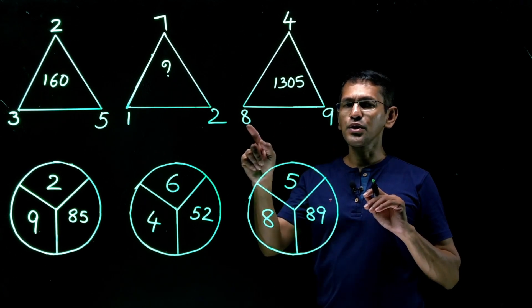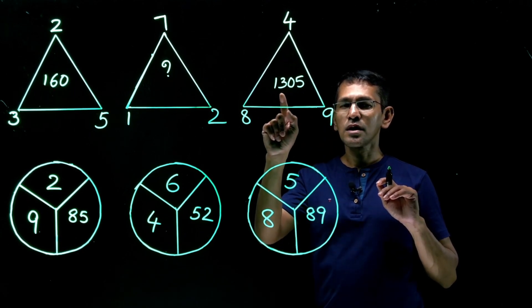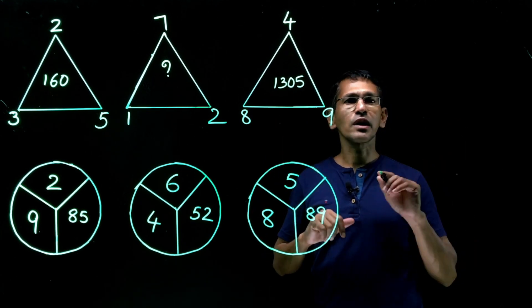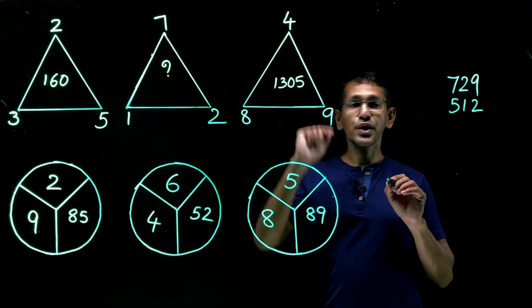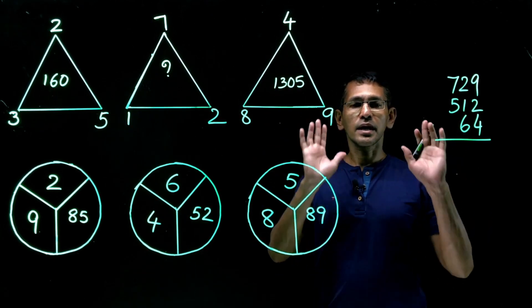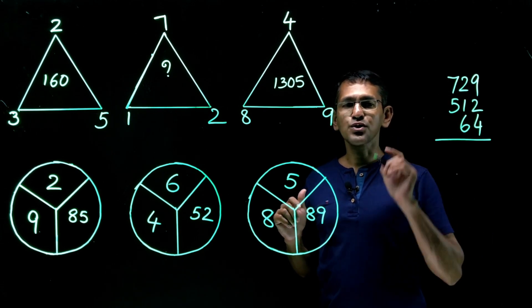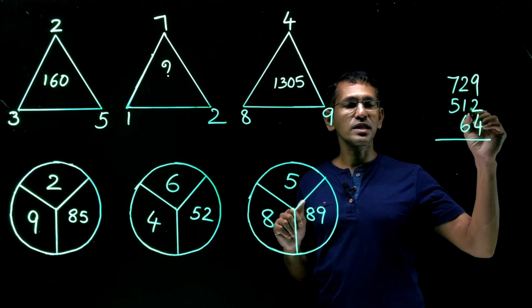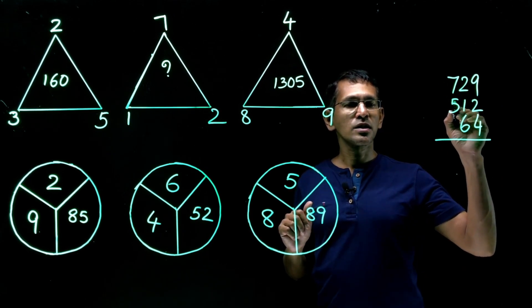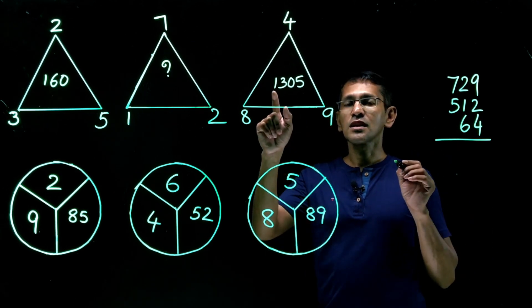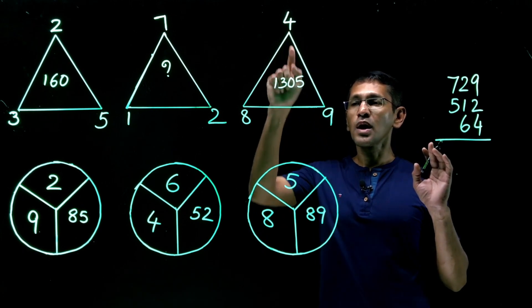9 cube? 729. 8 cube? 512. So 700 something, 500 something that comes close to 1200, right? Getting closer. Let's take a look at it. What is 9 cube? 729. 8 cube? 512. And 4 cube? 64. If you add it, again, no paper, no pencil, just mental calculation. What we have is 700 and 500. 700 plus 500, 1200. The balance is what? 64 plus 12, 76. 76 plus 29. But we will make it as 75 plus 30, 105. So 700 plus 500, 1200 plus 105. That is 1305. So we got the pattern.